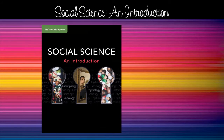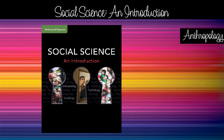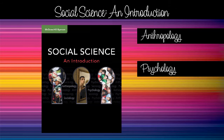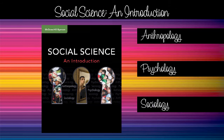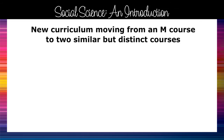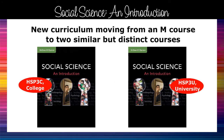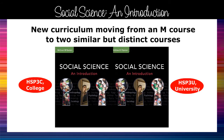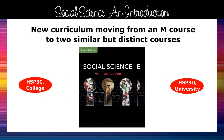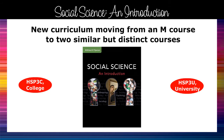This new program covers the grade 11 anthropology, psychology, and sociology curriculum. The new curriculum is moving from an M course to two similar but distinct courses. The Social Science and Introduction program delivers two programs in one, written for both the university and the college-level student.